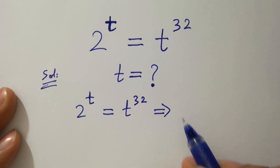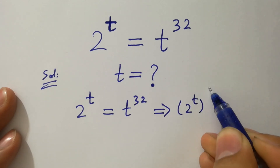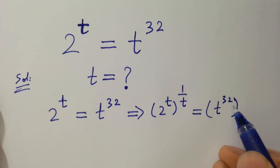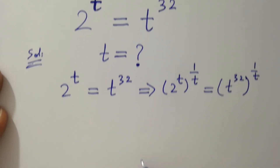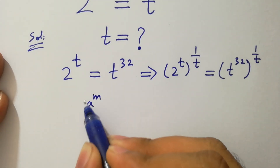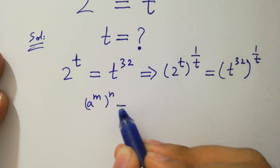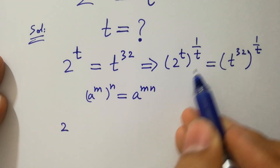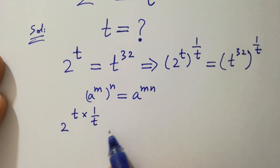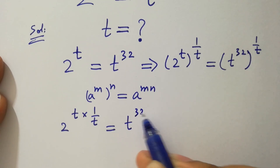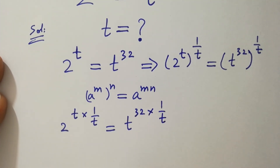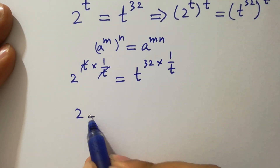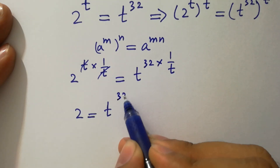To solve this, take power 1 over t on both sides. Since a to the power m, to the whole power n, equals a to the power m·n, it will be 2 to the power t times 1 over t, equal to t to the power 32 times 1 over t. t and t cancel, and we get 2 equal to t to the power 32 over t.